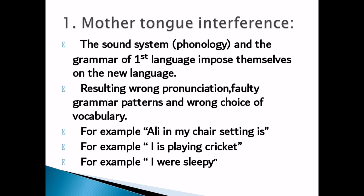Hum is tarah ki mistakes ya errors karte hain kyunki jab hum English ko Urdu mein translate karne ki koshish karte hain, translation ek doosre way mein hoti hai. For example: 'I is playing cricket' — yahan grammar pattern ki mistake hai kyunki 'is' he, she, it ke saath use hota hai, 'I' ke saath nahi. Aise grammar pattern mistakes, pronunciation mistakes, aur wrong vocabulary ki wajah se jo errors hote hain unhe mother tongue interference errors kehte hain.